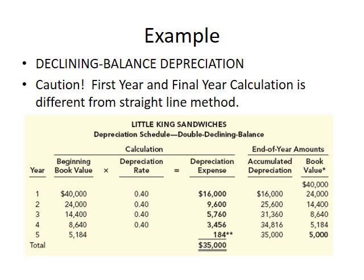The second method is the double declining balance method. Under this method, we assume we use more of the asset in earlier years and less in later years. Therefore, we depreciate more in earlier years and less in later years.